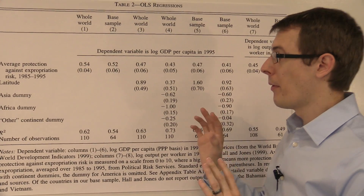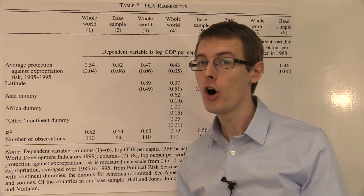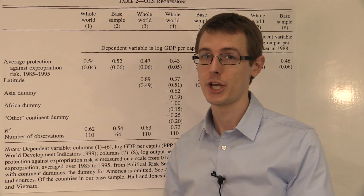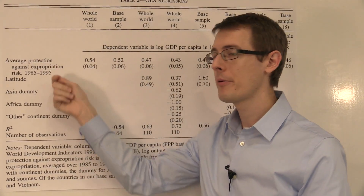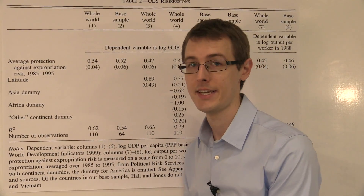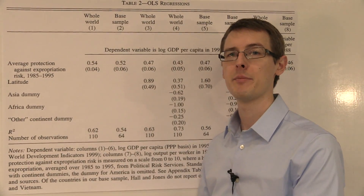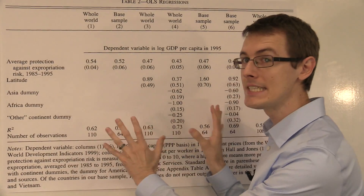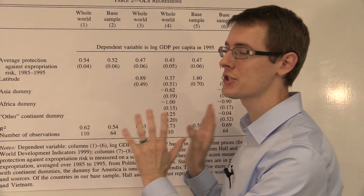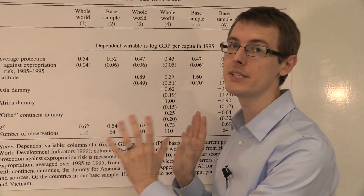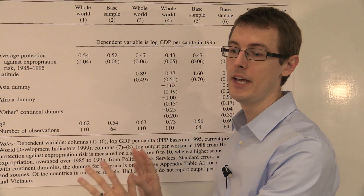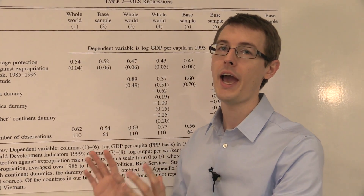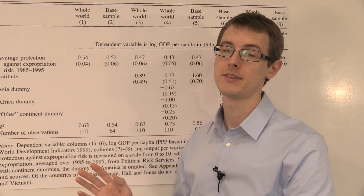What we want to know next is whether that is a causal relationship. Are property rights causing high economic development, or is it something else? That's not what this table is showing us — it's just describing what we see in the data. To learn about causality, we're going to have to do something else.